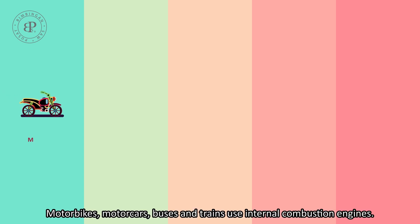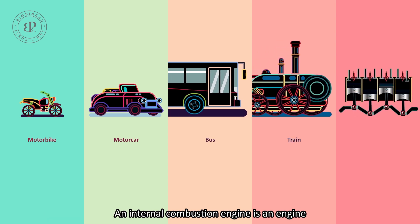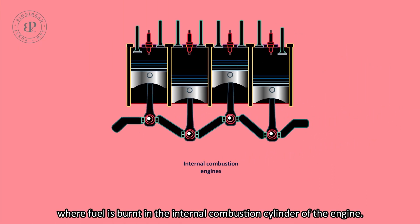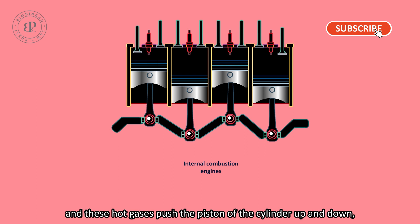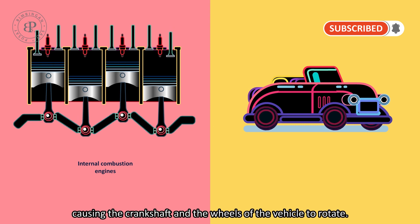Motorbikes, motorcars, buses, and trains use internal combustion engines. An internal combustion engine is an engine where fuel is burned in the internal combustion cylinder of the engine. During combustion, the burning fuel produces hot gases under great pressure, and these hot gases push the pistons of the cylinder up and down, causing the crankshaft and the wheels of the vehicle to rotate.